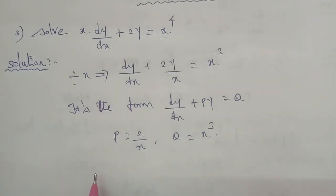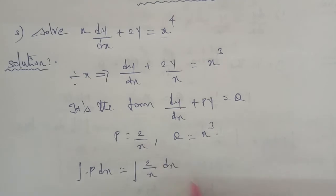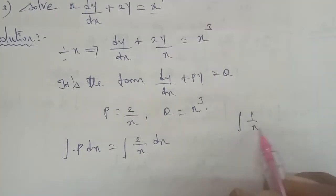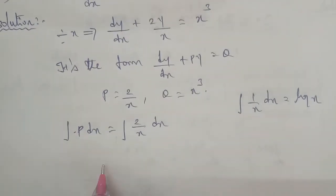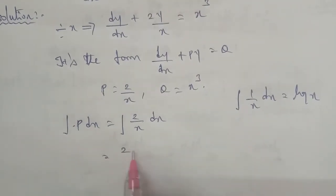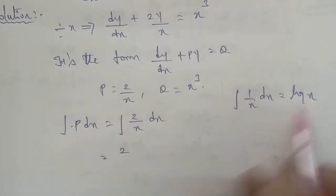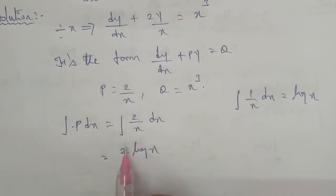So therefore, here we find the integral of p dx. Integral p dx is equal to integral of 2 by x dx. Using the direct formula, integral of 1 by x dx equals log x, so this gives 2 log x.